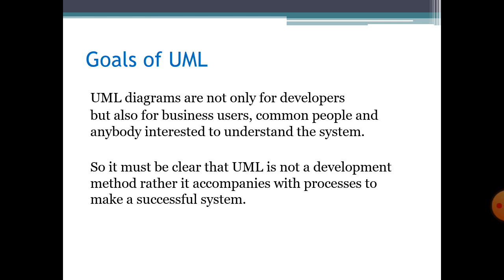A UML diagram is not only for developers — it also helps other users, common people, and anybody interested in understanding the system. UML is a unified modeling language that is not just for developers' understanding; it is also for end users and business users, like other common people which we also call stakeholders. Stakeholders are those people who are directly or indirectly affected by the system. So UML is not only for developers — it is also for all stakeholders of the system.